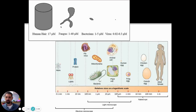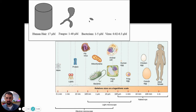Here's another way of viewing size: a human hair is about 17 microns in diameter on average, a fungal hypha can be 1 to 40 microns across, and a bacterium is 1 to 5 microns. Viruses are 0.2 to 0.3 microns — quite a bit smaller than bacteria. Don't think we lump bacteria and viruses together; they are really not the same thing at all.